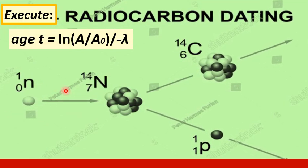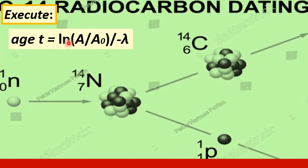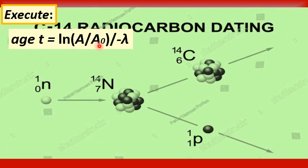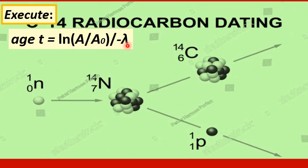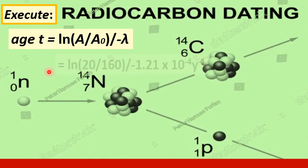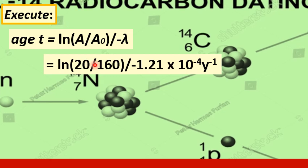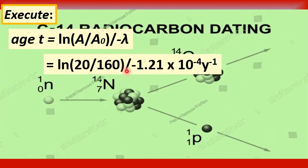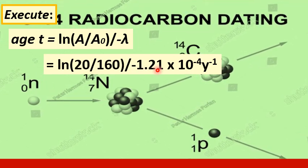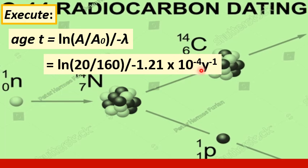Finally we can now compute the age of the artifact. The time t can be determined using this formula: t equals the natural log of the ratio A over A₀ and then divided by the negative value of the decay constant lambda. That is t equals the natural log of 20 counts per minute divided by 160 counts per minute and then divided by the computed value of the decay constant, negative lambda is -1.21 × 10⁻⁴ per year.